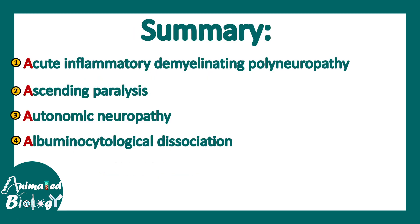In summary, Guillain-Barré syndrome is acute inflammatory demyelinating polyneuropathy, i.e. AIDP. It is characterized by ascending paralysis, there is autonomic involvement, and there is albuminocytological dissociation on CSF studies. These are known as the four A's of Guillain-Barré syndrome.